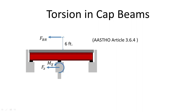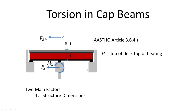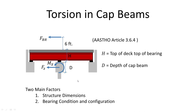The magnitude of the torsion and the lateral load that this braking force induces into the cap beams depends on two main factors. One is the structural dimensions — that is, the distance from the top of the deck to the top of the bearing, and the depth of the cap beams. The other factor is bearing condition and configuration. By bearing condition, I mean whether the bearing is a fixed or expansion bearing, and by configuration, I mean whether there is a single row of bearings or two rows of bearings on a cap beam.